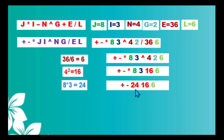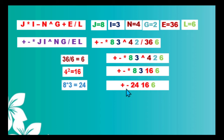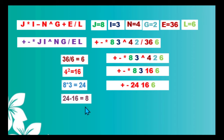Our prefix expression now is: addition operator, subtraction operator, 24, 16, and 6. We scan this new expression from right to left and look for the first operator. Scanning: 6, 16, 24, subtraction operator — this is our first operator. We look for the immediate two operands to the right: 24 and 16. We perform subtraction: 24 minus 16 equals 8.